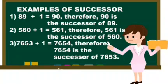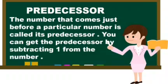That means 7654 is the successor of 7653. So keep in mind, the successor of a number means the after number of that number or the just after number is the successor. If we add 1 to the number, we will get the successor. Now let's move to the predecessor.